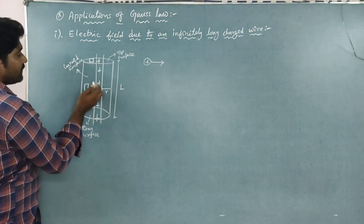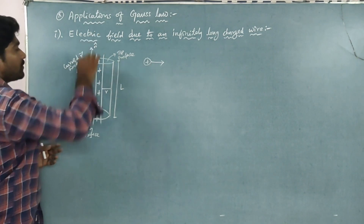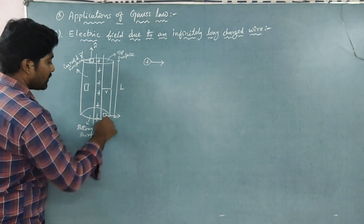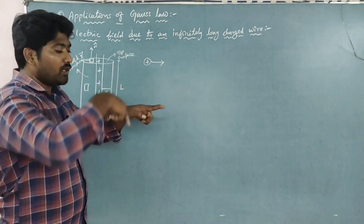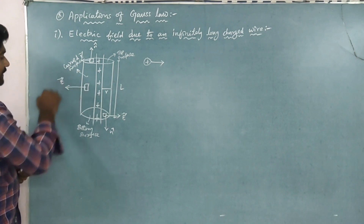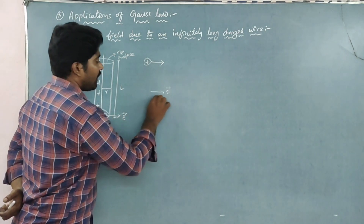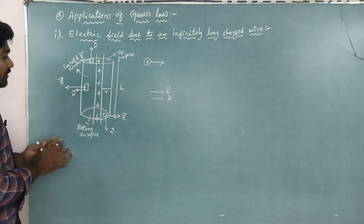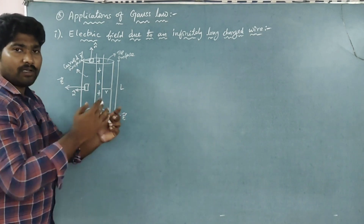What is the top surface? The electric field is outward due to the positive charge. The E vector is in the outward direction, and this is the normal vector. The bottom surface also has a cross-sectional area. Here we have shown the diagram with E vector direction.